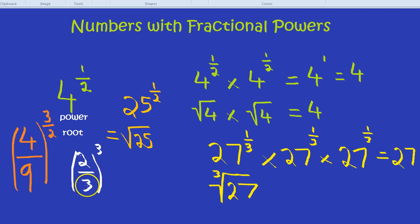So we now have 2 thirds cubed. 2 cubed is 8, and 3 cubed is 27. 4 over 9 to the power of 3 over 2 is 8 over 27.